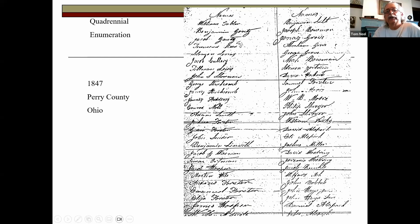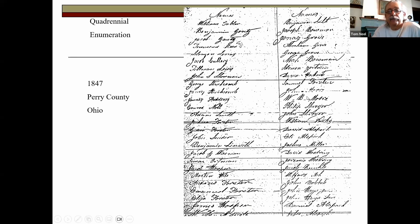This is what a quadrennial enumeration looks like. The earlier ones are basic — just giving the name of males over age 21 living in a particular township. So there'd be a quadrennial enumeration in Perry County in 1847, another in 1851, another in 1855 — just add four years. They went up into the 1900s. Some counties kept all the names listed; others, like Huron County, just did totals — just saying there are 200 males over age 21 in the township without giving names. Perhaps there were names at one time that were disposed of.